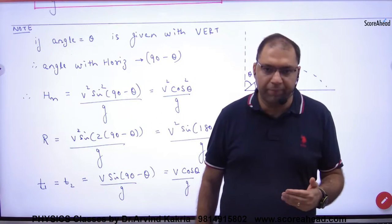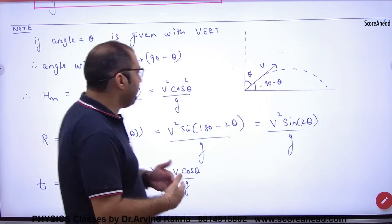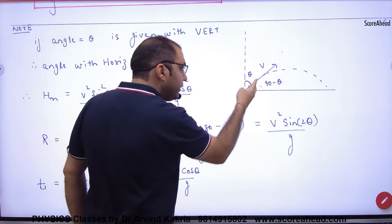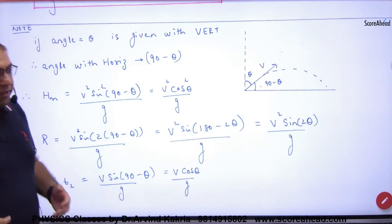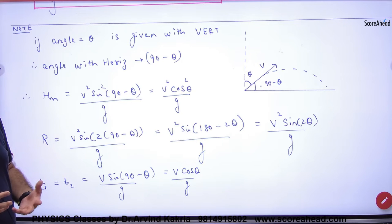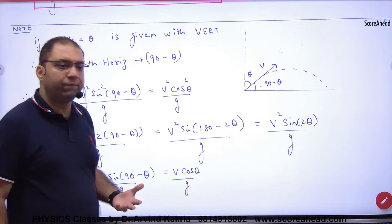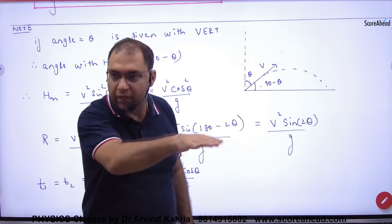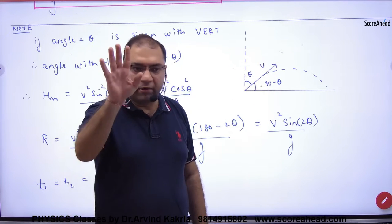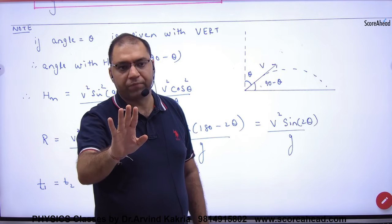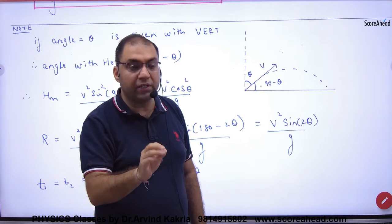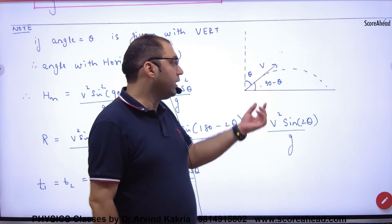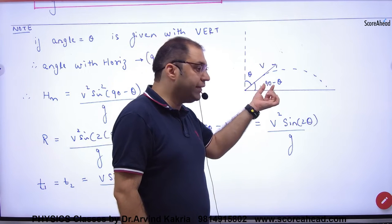If you have a projectile, how do you make an angle with a vertical? We have done so many topics, so we have understood that a projectile with velocity V is making an angle of theta with a horizontal. We have removed maximum height, range, time of descent. We have understood which angle is theta with a horizontal.